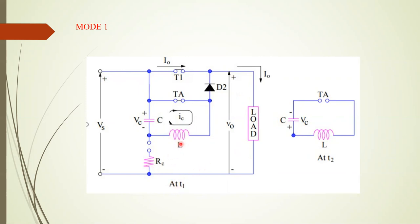At T0, the capacitor is already charged to a maximum value of Vs, so Vc equals Vs — it is maximally charged. Now, when the auxiliary thyristor TA is turned on in order to turn off thyristor T1, the capacitor starts discharging through TA.